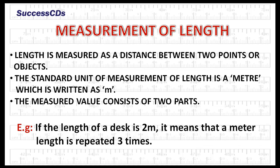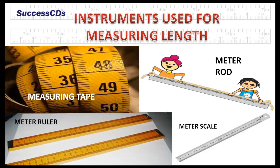The measured value consists of two parts. For example, if the length of a desk is two meter, it means that the meter length is repeated three times. There are many instruments used to measure length.